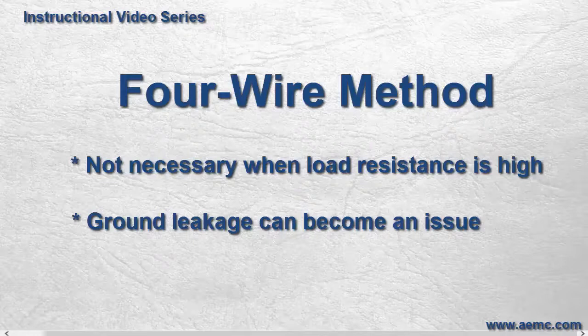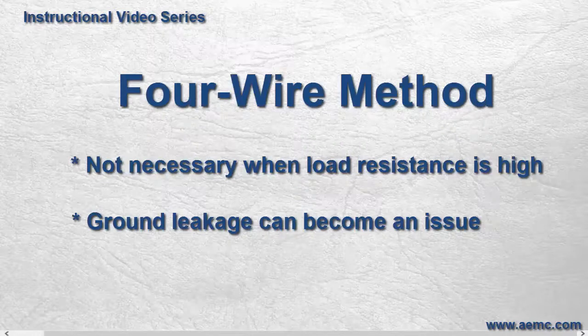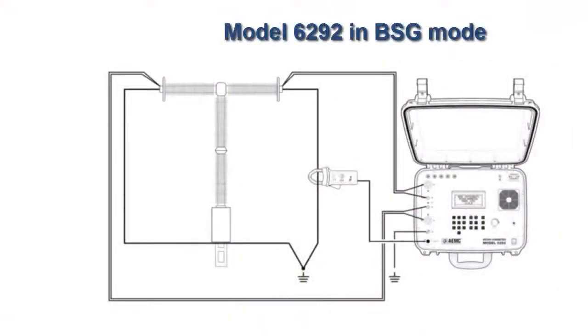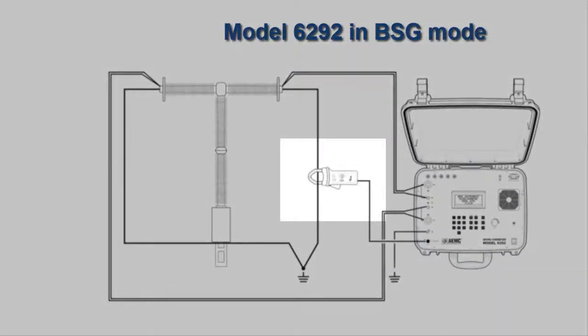The model 6292 mitigates the problem of ground leakage by offering a mode called Both Sides Grounded or BSG mode. In this mode, the model 6292 uses an external DC current probe to measure and eliminate ground leakage current from the total test current.